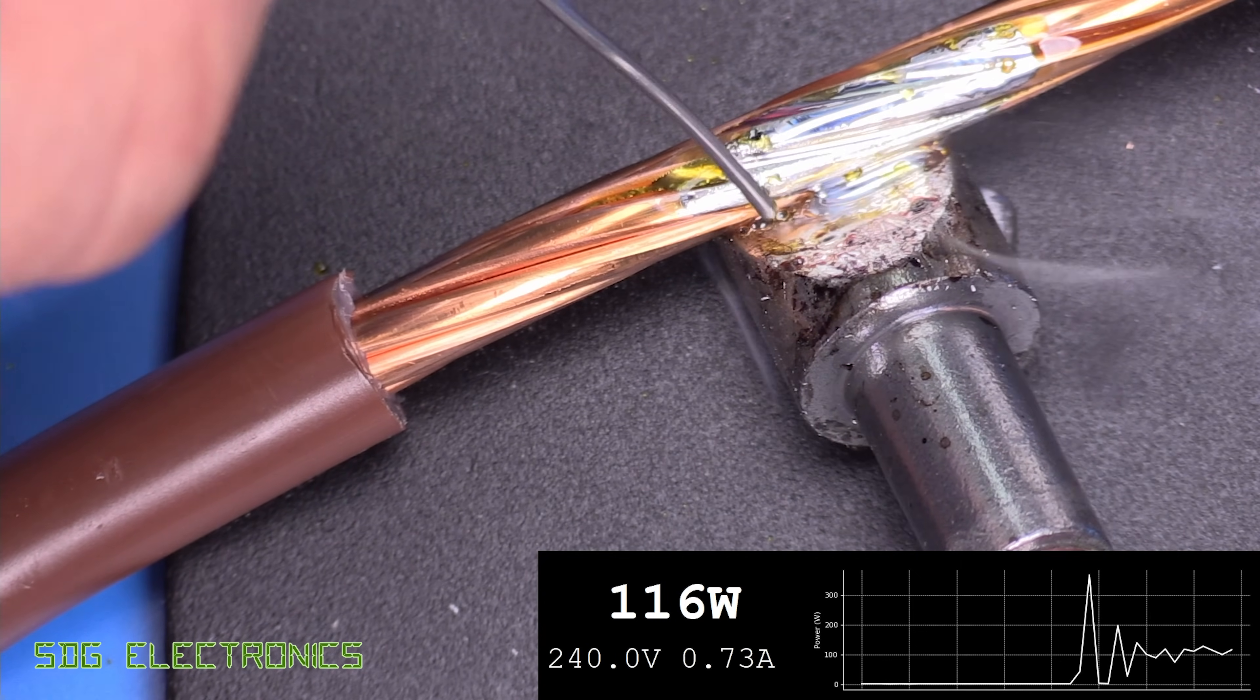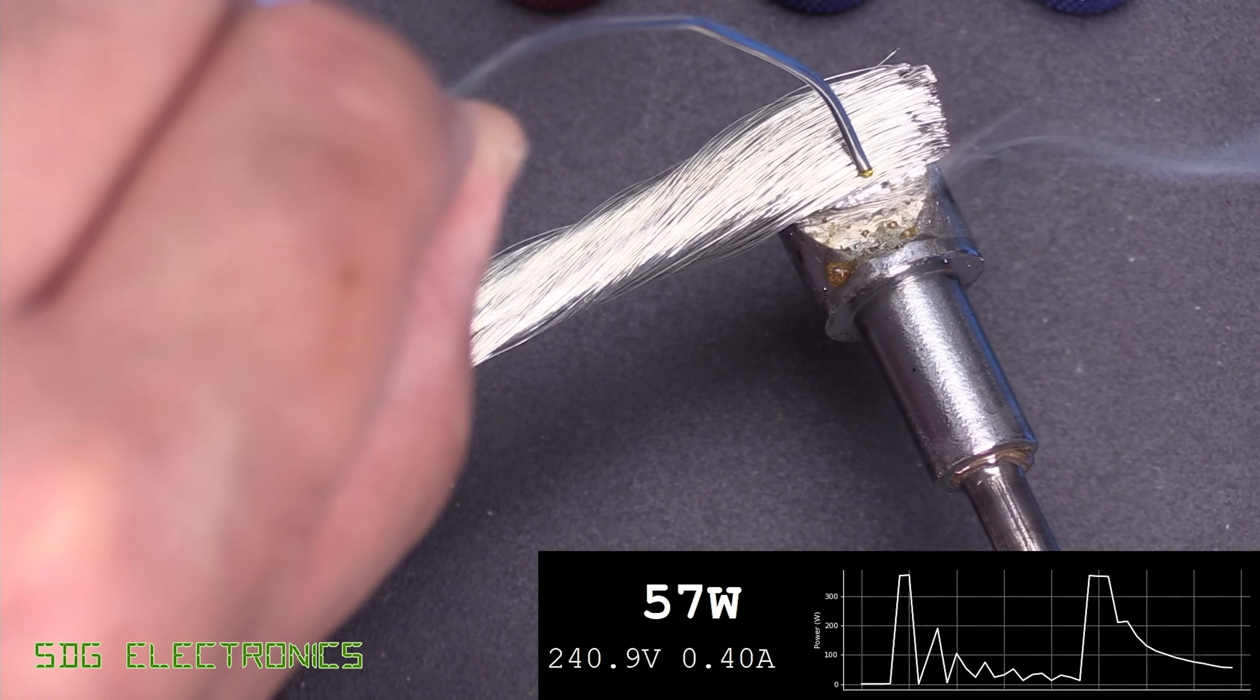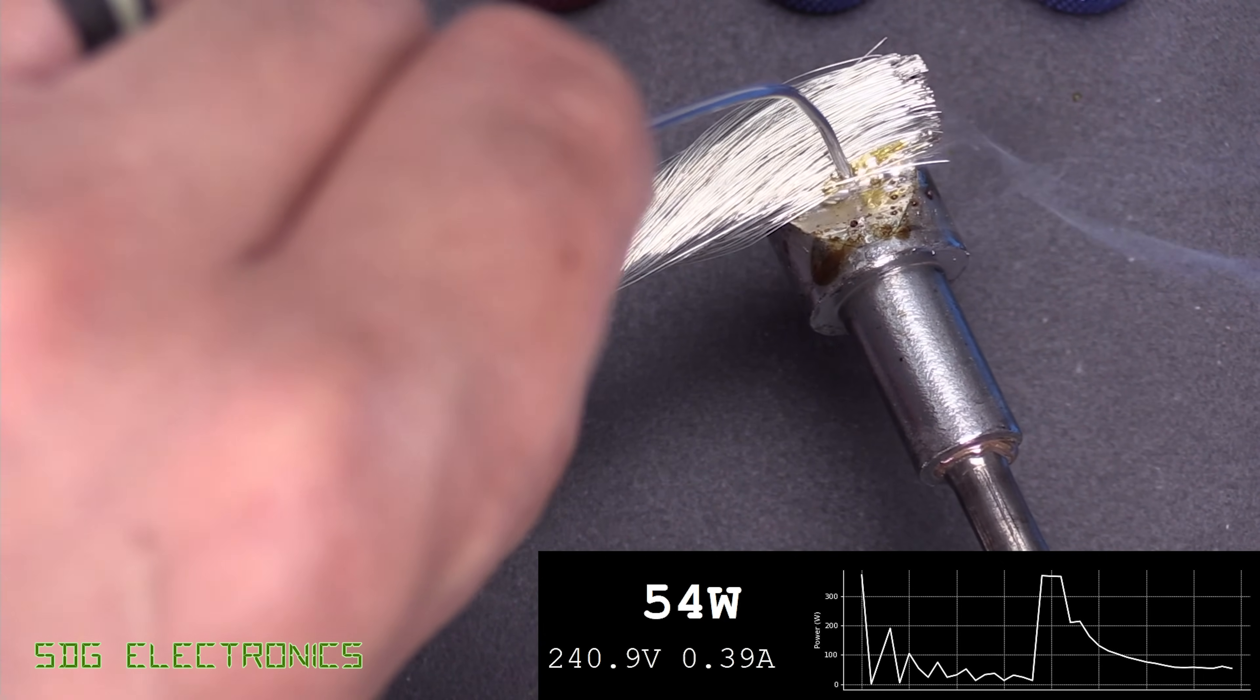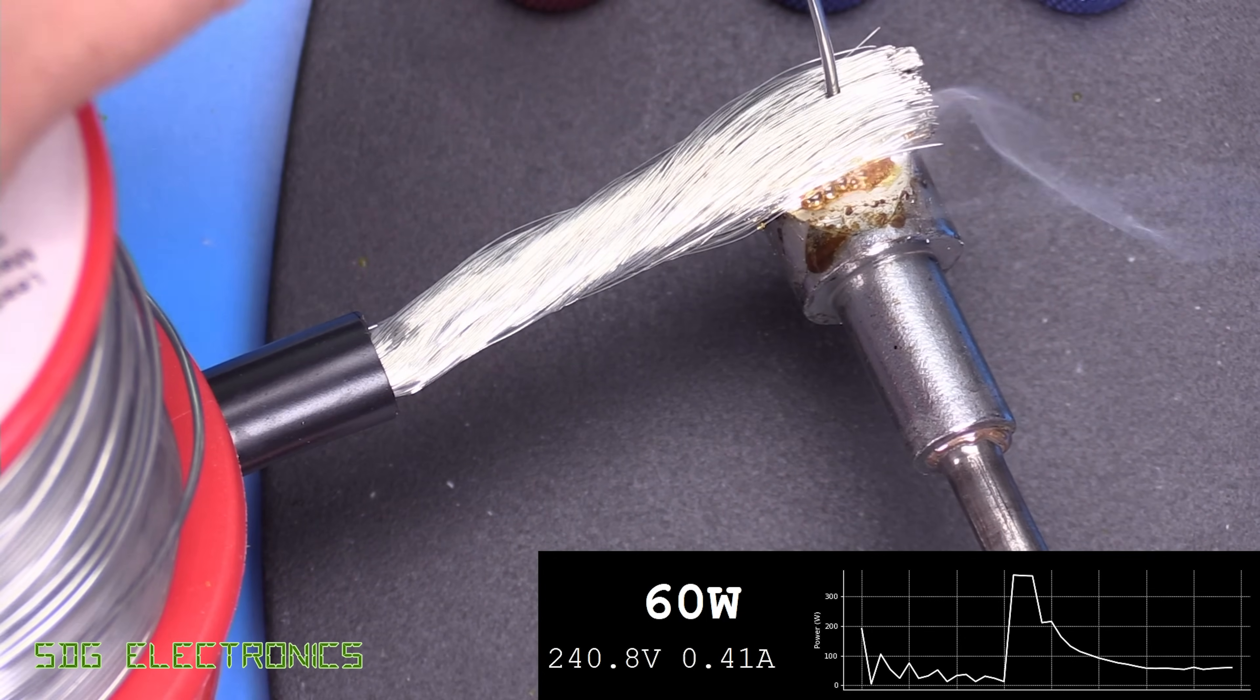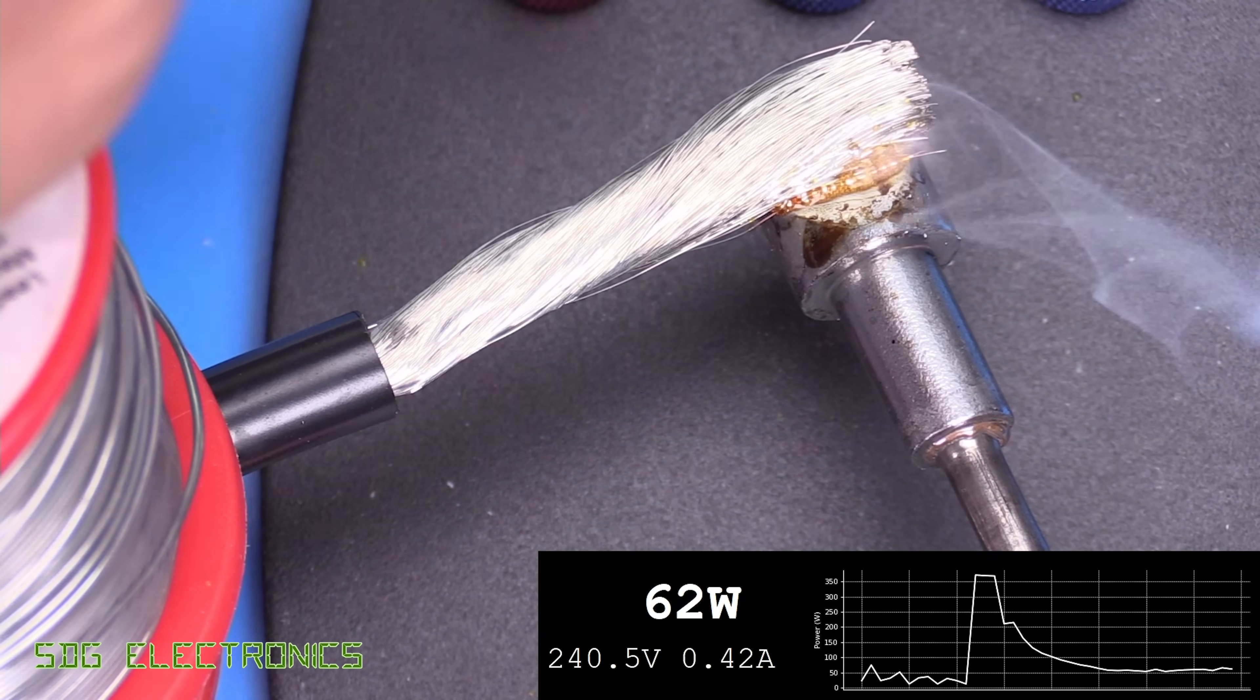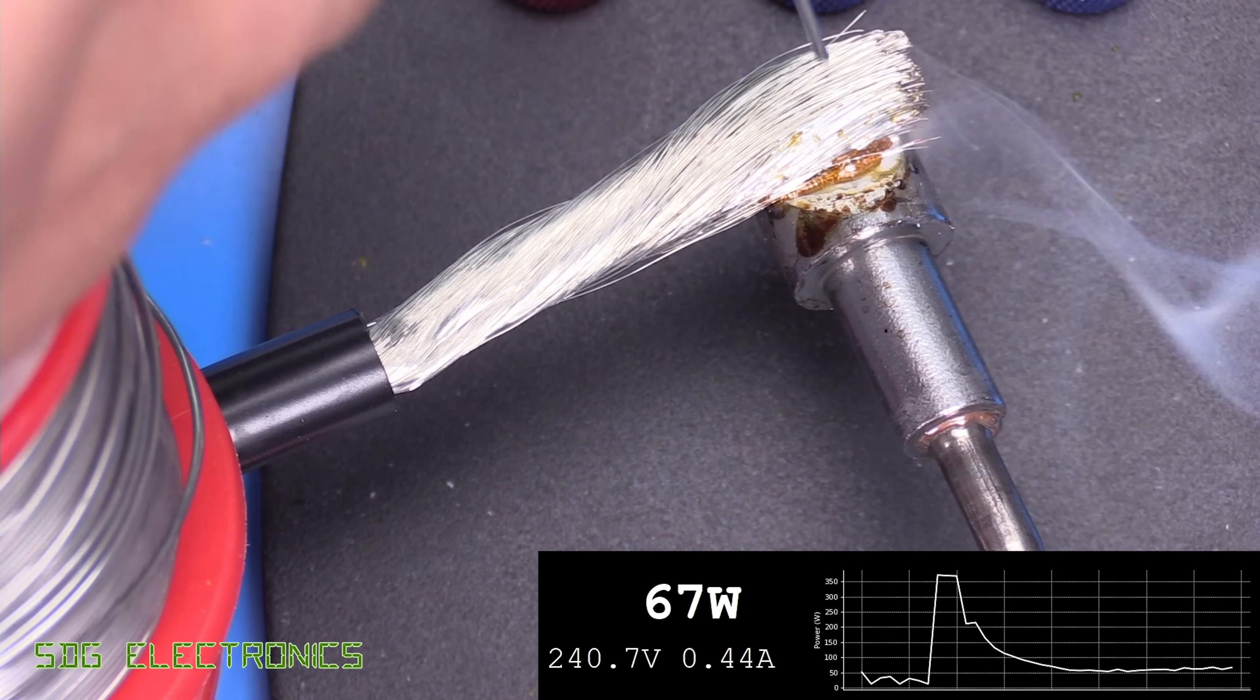We could do with something to compress the strands together. And again, we're not really showing the full capability of the iron, because it only seems to be drawing about 70 watts from the mains here.